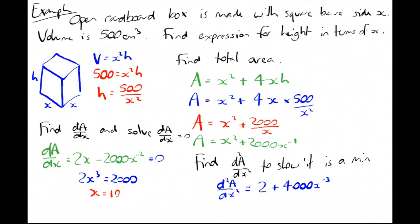To show that it's a minimum, I'm going to plug in x as 10. Remembering that x⁻³ means it's underneath, the 3 means it's cubed. So it's 2 + 4000/1000, which is 2 + 4 = 6, positive, therefore it's a min.